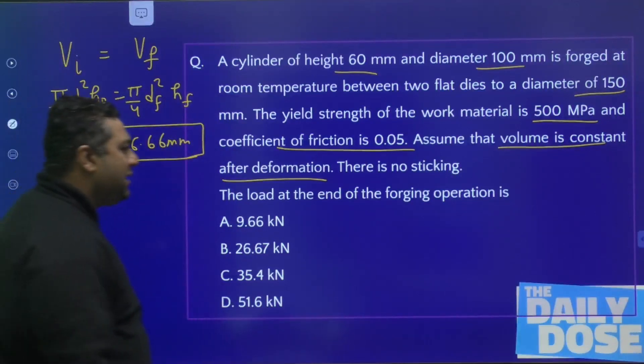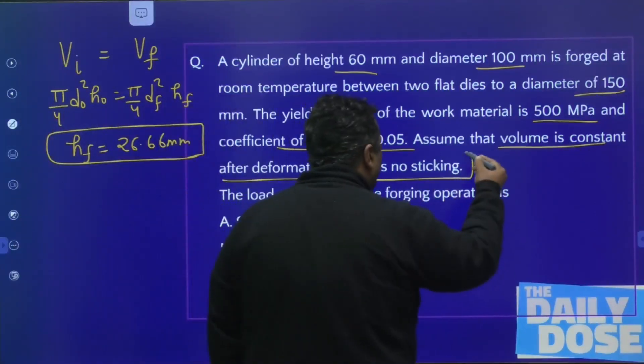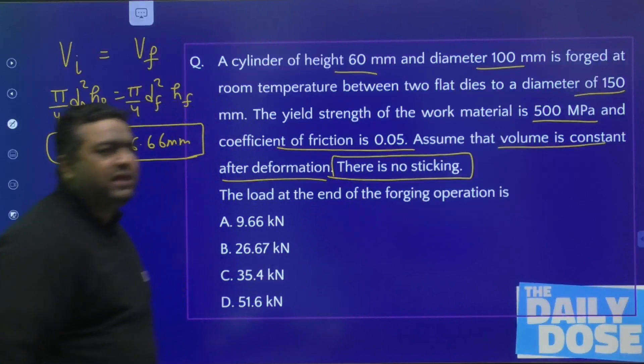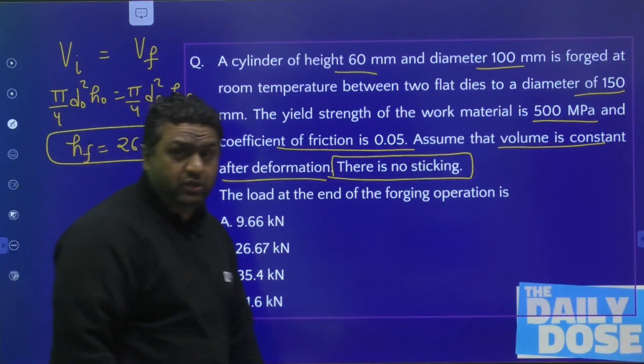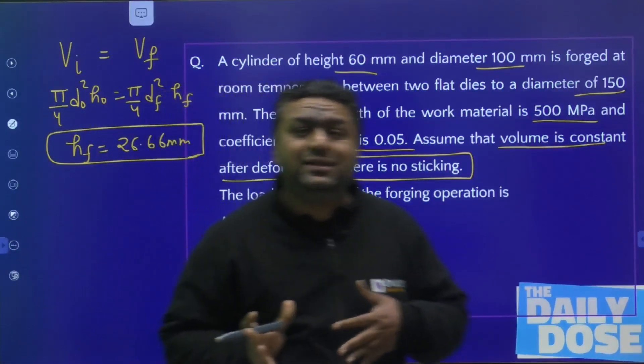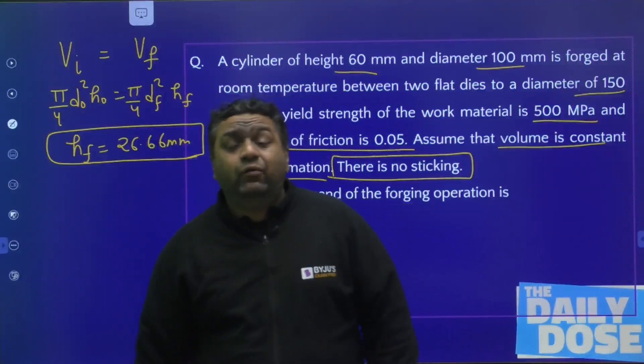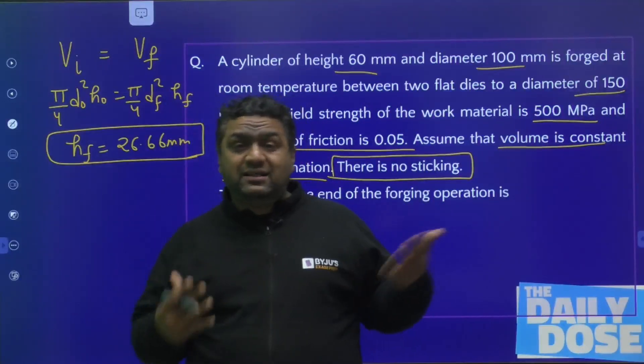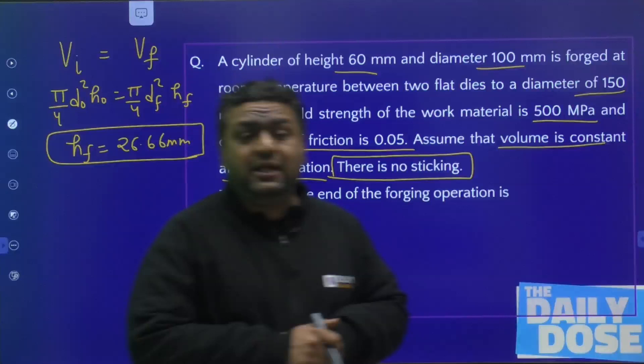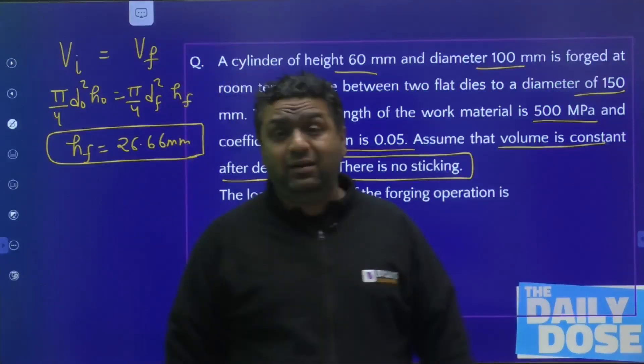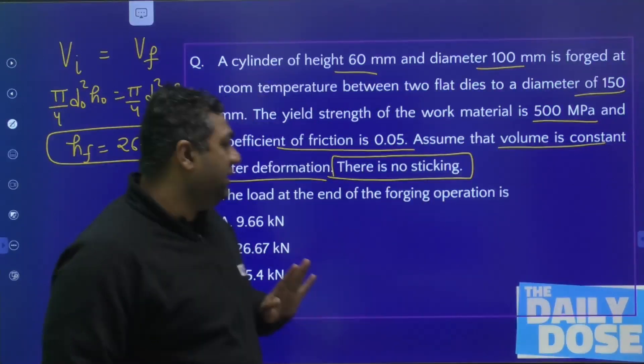They are mentioning there is no sticking. You know in forging, when we go for derivation, we have sticking model, sliding model—very big derivations. We have seen region-wise analysis and the slab method in classes.